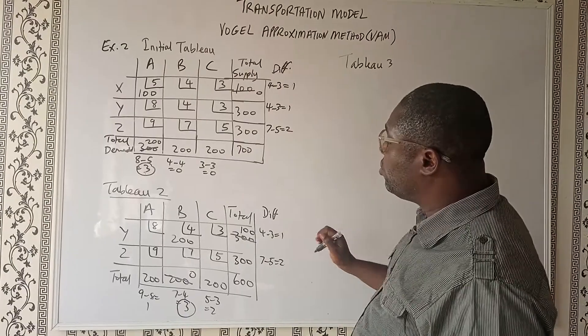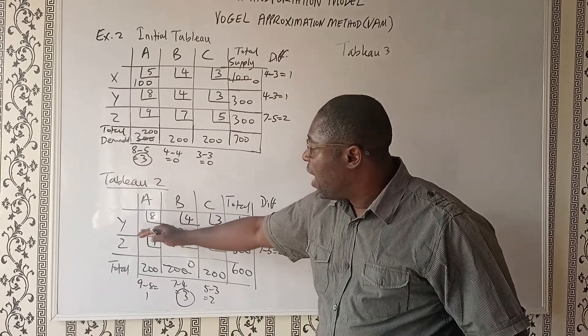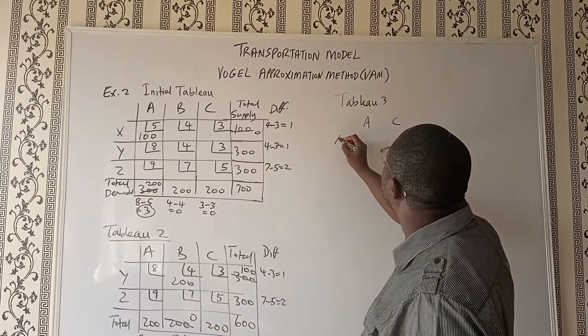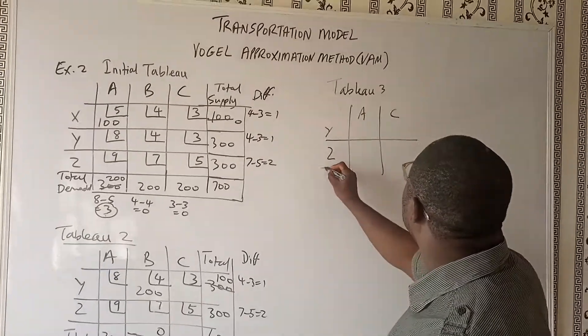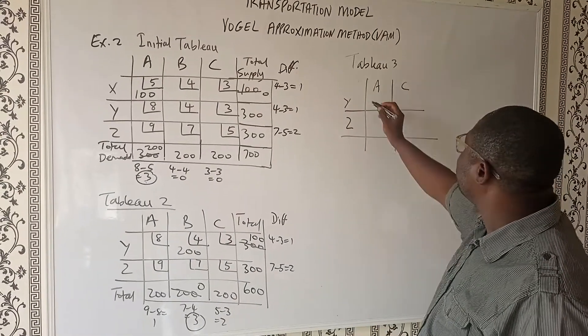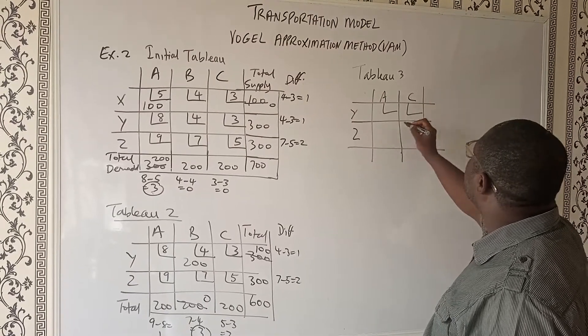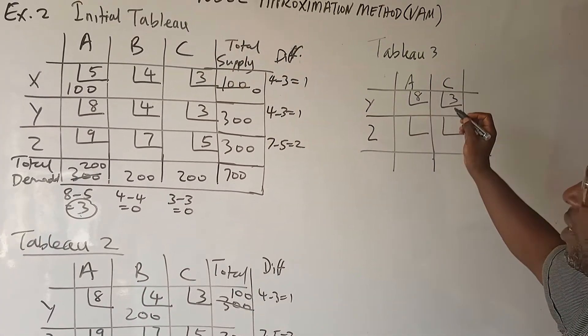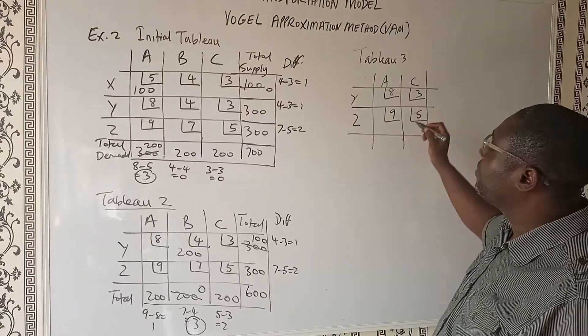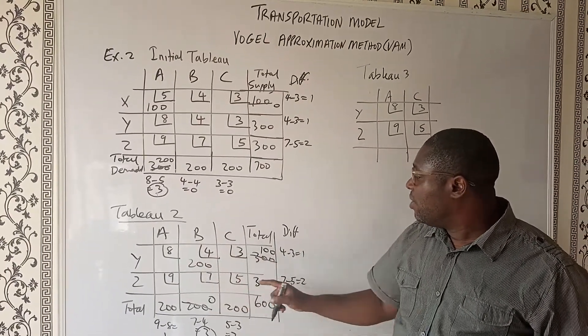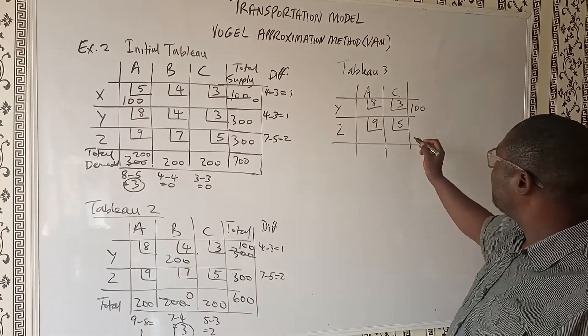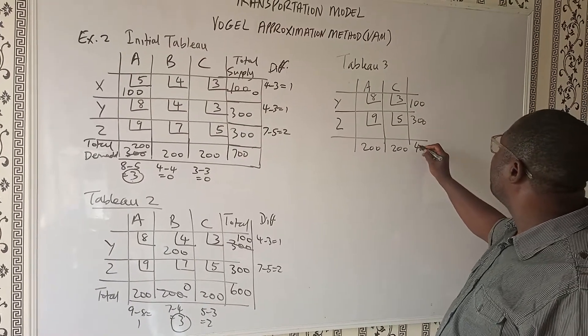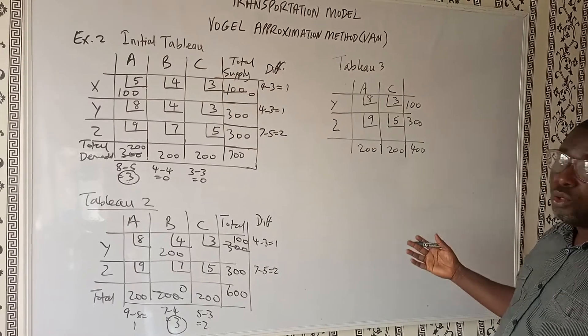We are going to eliminate column B since column B has been fully satisfied here. So let's do tableau 3. And tableau 3 is going to have column A and C, then Y and Z. So A and C, then Y and Z. So A, we are going to have 8 here and 3. Then we have 9 and 5. It's from here: 8 and 3, 9 and 5. Remember, what we are left with is 100 and 300. Then what we are left with here is 200 and 200. So if you add this up, this gives us 400. This gives us 400.